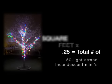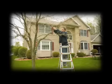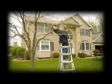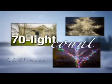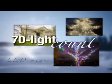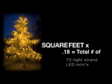After you determine the square footage, multiply that number by .25 and that will tell you how many strands of 50 light count minis you will need to properly branch wrap the tree. Now if you're using 70 light count LED minis, you do the same square footage calculation but multiply the total by .18 to get your total amount of strands.